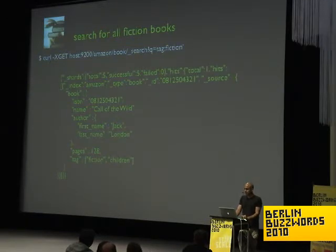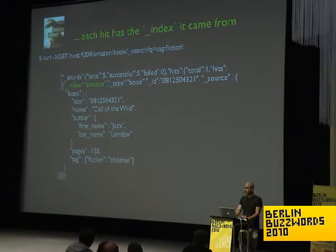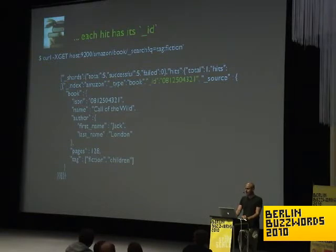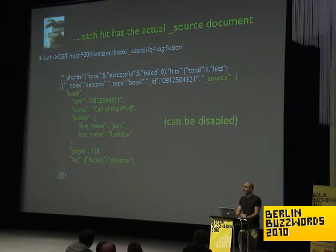Now let's search for all the fiction books. We get back a result with the total hits — in our case, one, because we indexed only one document. For each hit, we get the index it came from, the type, and the ID itself. As an added feature, we can get the source of the document, how it looks when we indexed it, though it can be disabled if you don't want to store the actual document.